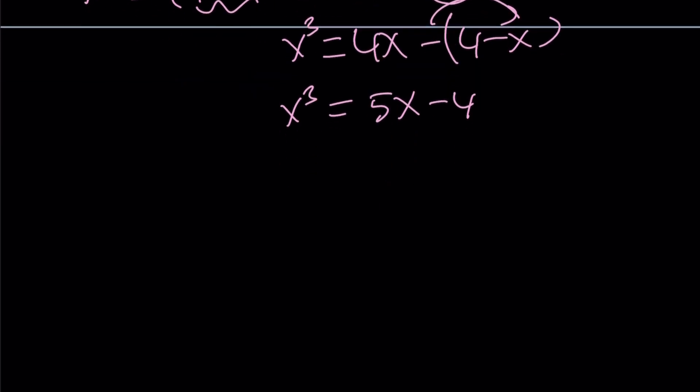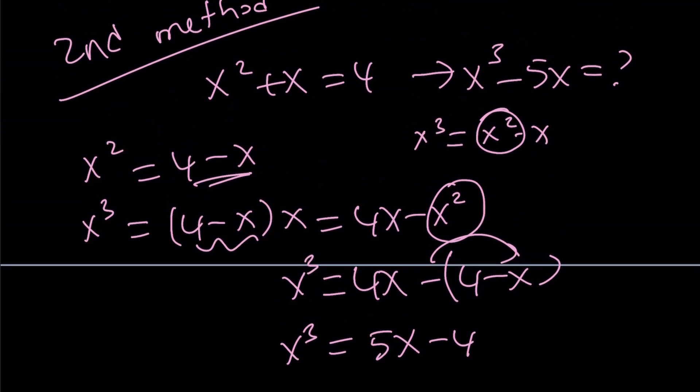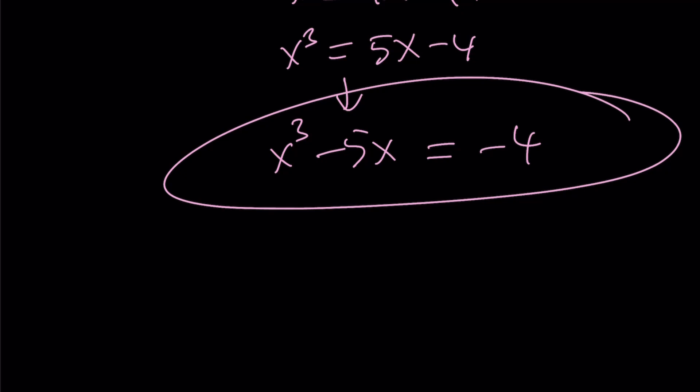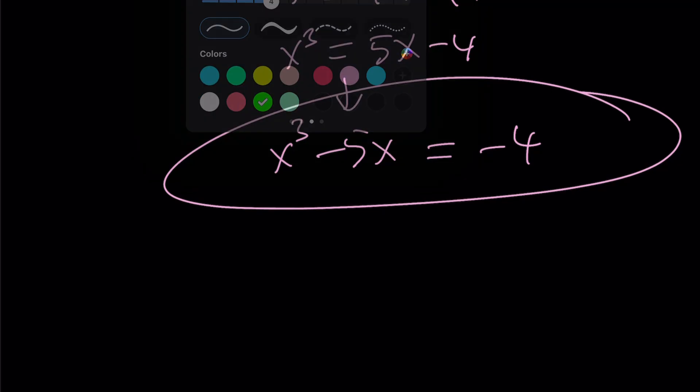Now, what does that tell you? What am I looking for? x cubed minus 5x. Awesome. From here, if you subtract 5x from both sides, you get x cubed minus 5x equals negative 4. And that is the answer. Great. Let's go ahead and take a look at the third method.